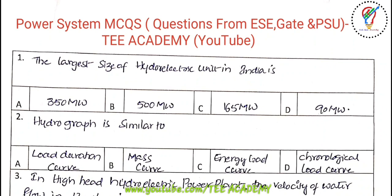The first question: the largest size of hydroelectric unit in India. Each unit is having 165 megawatts, and the largest size of hydroelectric power plant in India is about 2400 megawatts — that is the Tehri Dam.